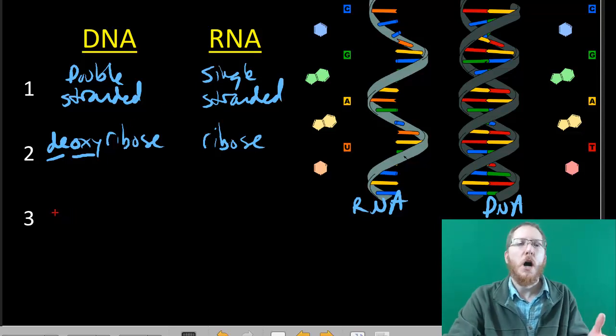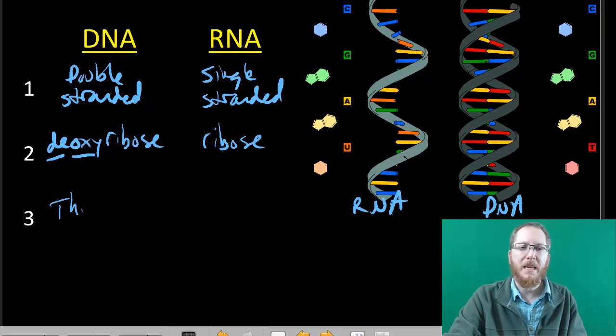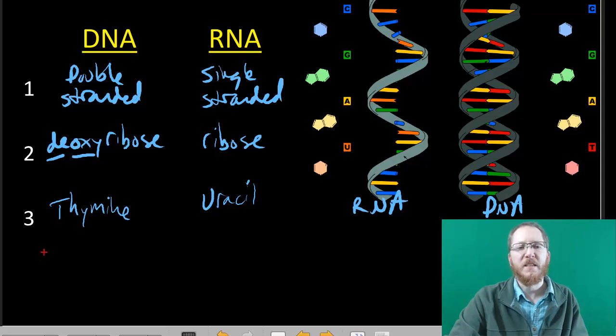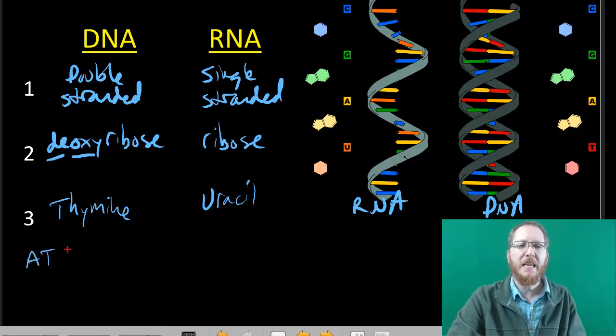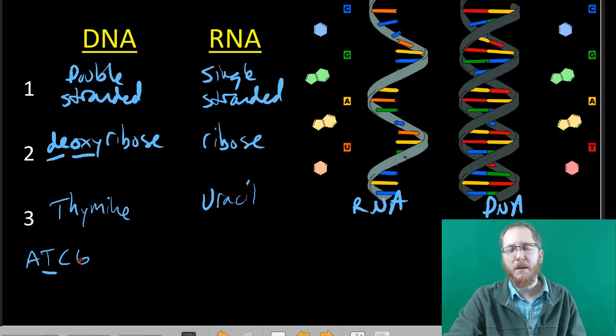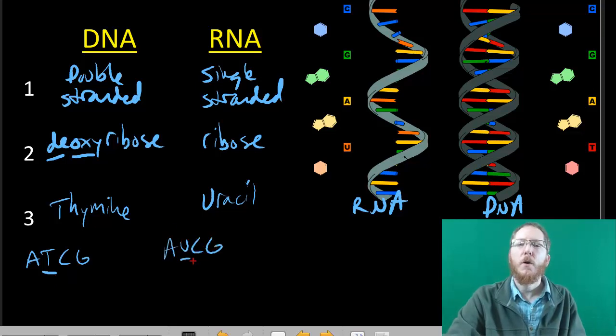The last bit is that when we talk about DNA it's going to have thymine, which is T when I abbreviate, whereas RNA is going to have uracil. Both of these guys will be attracted to adenine, but it makes it very useful because if I give you a sequence that's like A-T-C-G, you know right away it's DNA because it has a thymine. Just like if I give you a sequence that's A-U-C-G, you know it must be RNA because it contains uracil, and only RNA contains uracil.